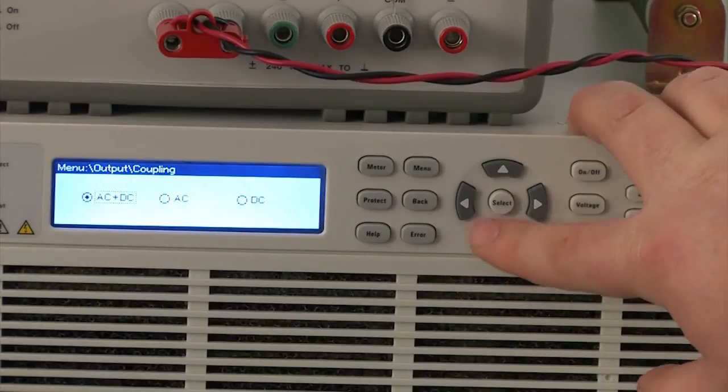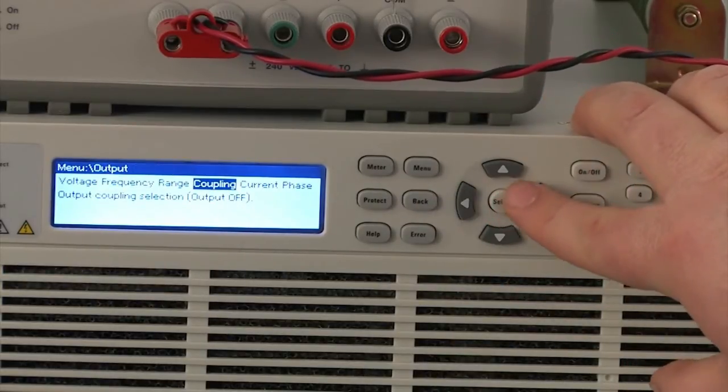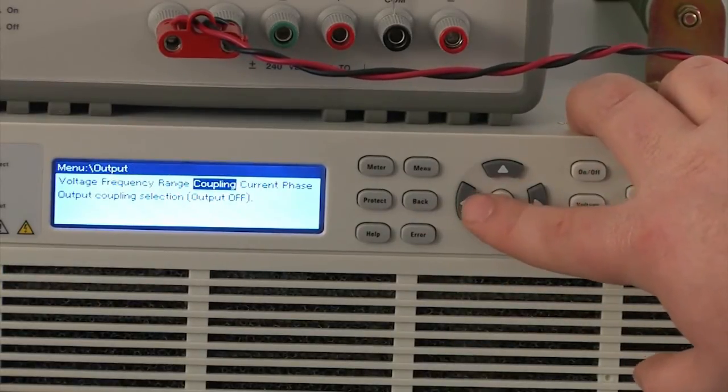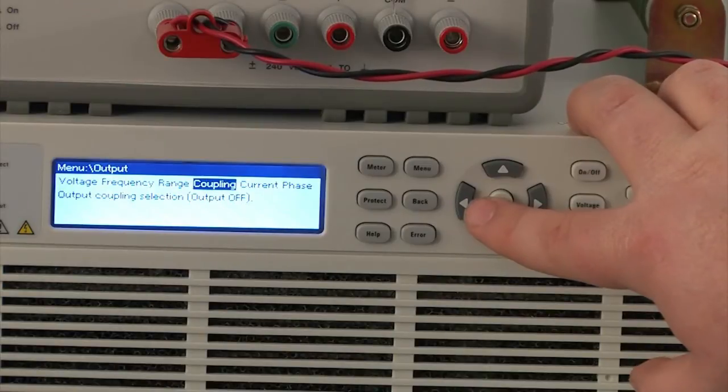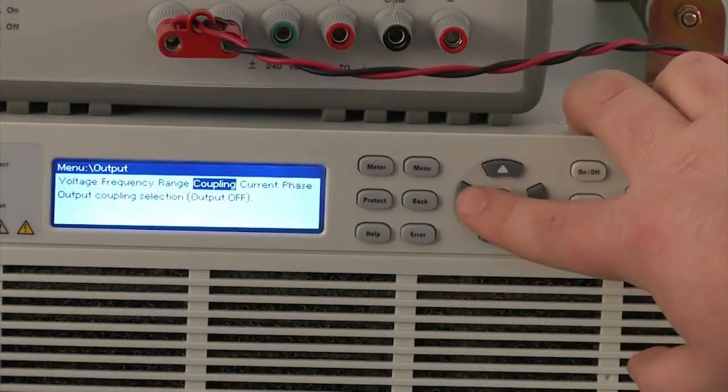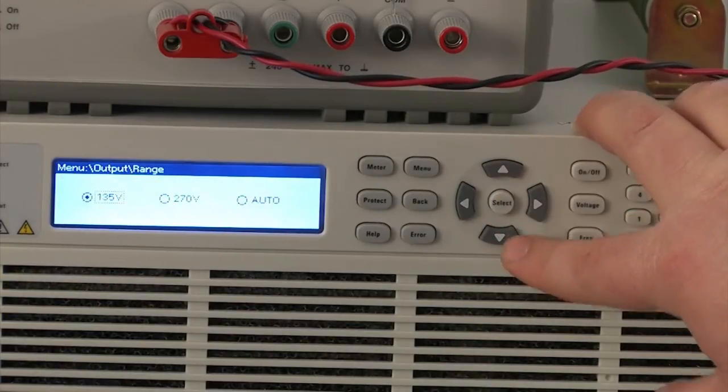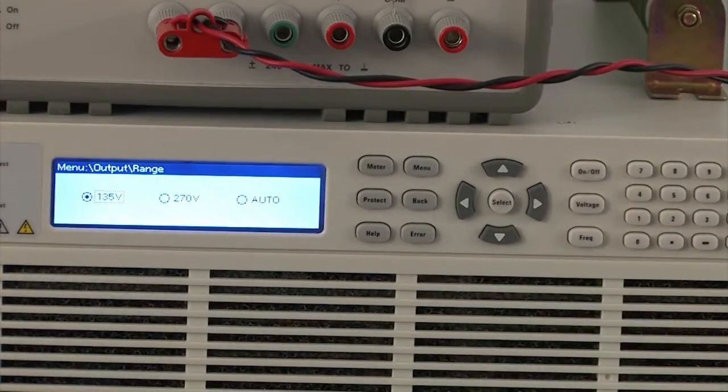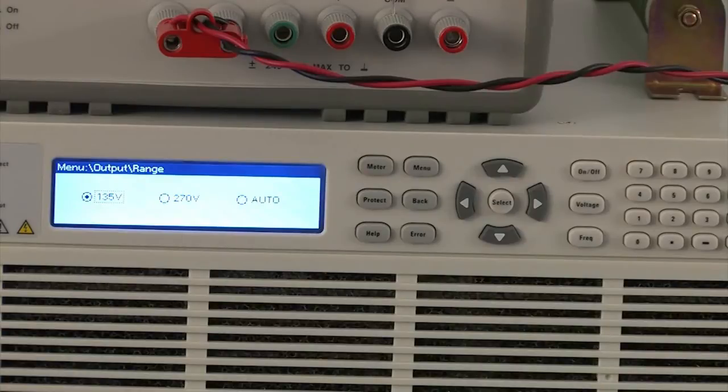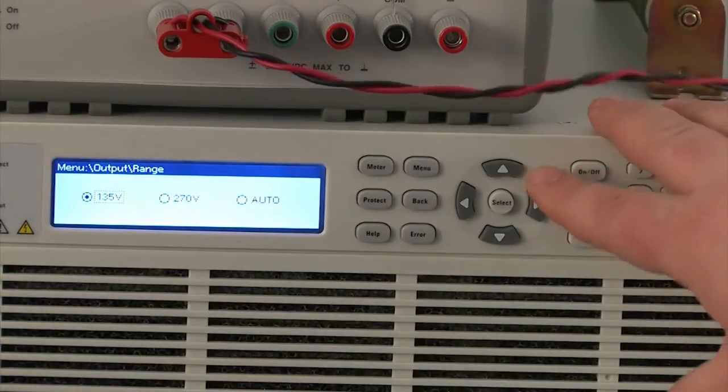So we'll choose AC and DC for now and hit back. And another feature that is pretty interesting is there's a range for output programming voltage. You can see that there's two different ranges. There's the 135 volt range and 270 volt range. You're going to want to use the 135 volt range for 120 volt testing, 100 volt testing, and 270 volts used for 240 volt testing and 230 volt testing.